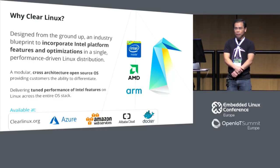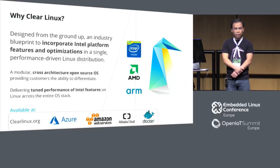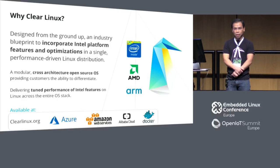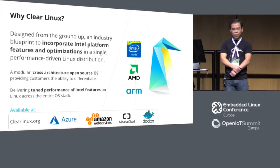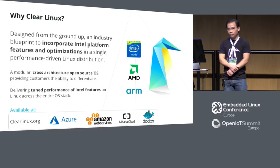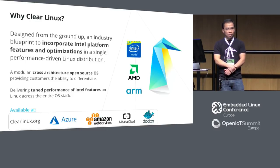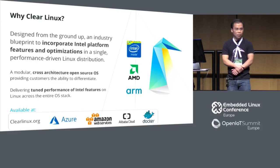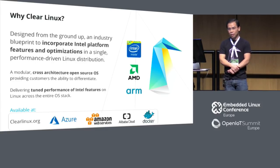Clear Linux is designed from the ground up. It is based on all the learnings we've had at the Intel OTC center from years of contributing to open source projects. It's an industry blueprint that gives you the best performance capability on Intel hardware. If you buy the latest Intel hardware, we'd rather you use a newer operating system that takes advantage of that hardware instead of a three-year-old OS. We work to optimize it as much as possible for Intel.